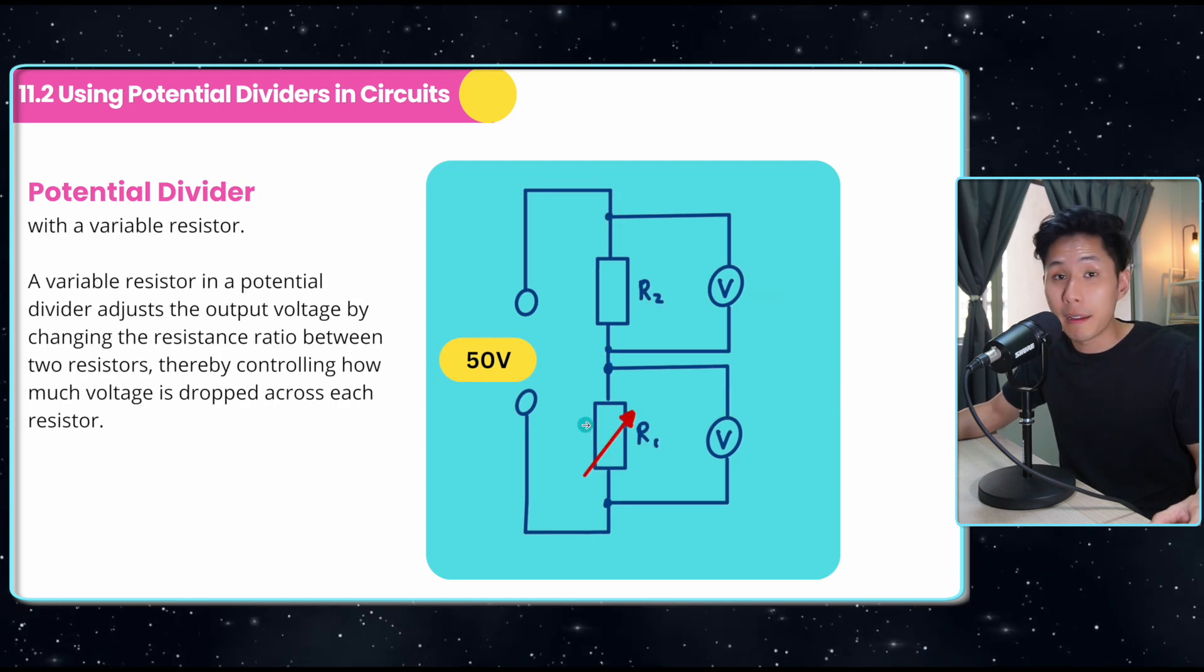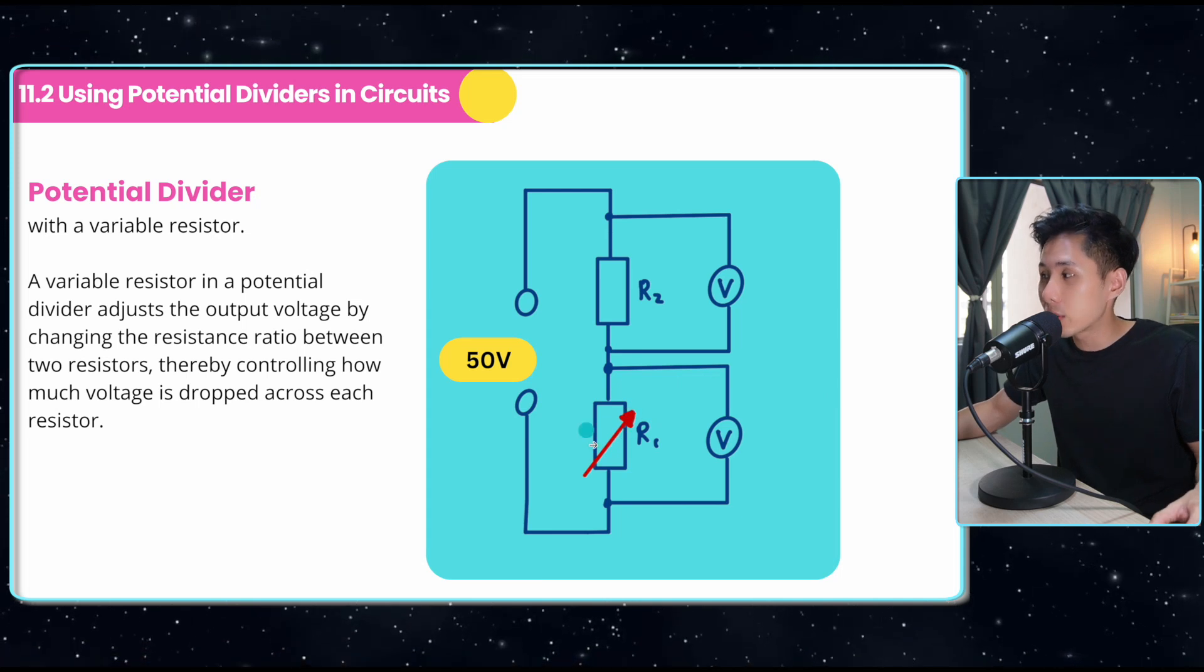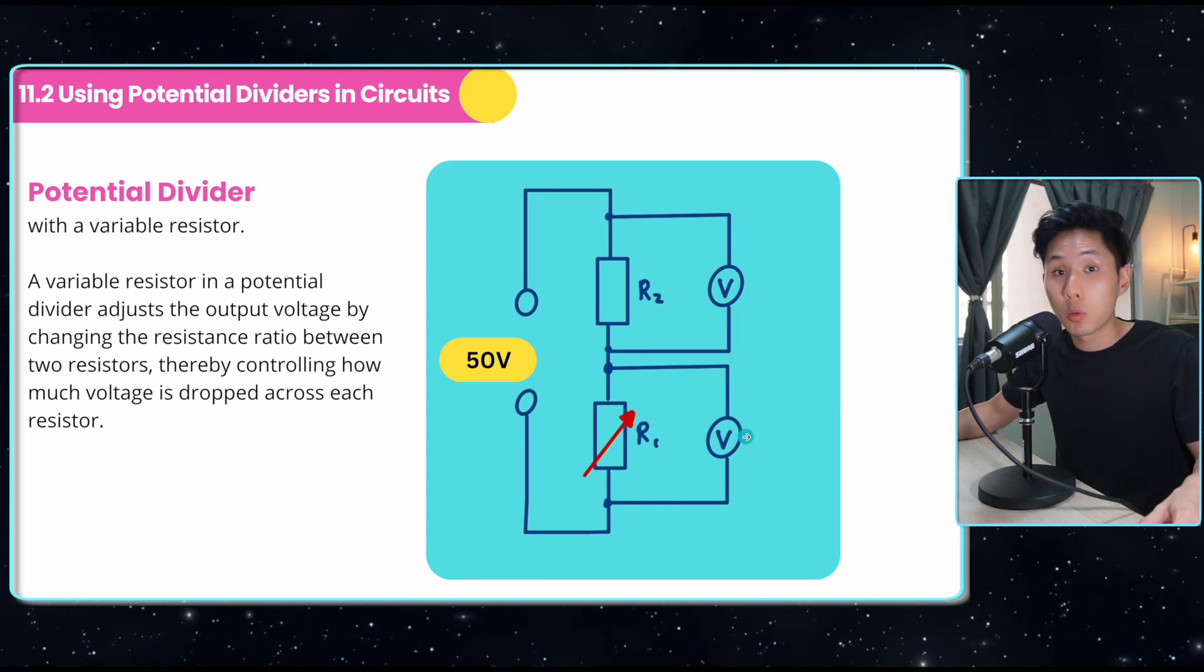Sometimes people also put variable resistors into this potential divider. It's very convenient to just change the resistance. When you change the resistance here, the voltage will also be changed.